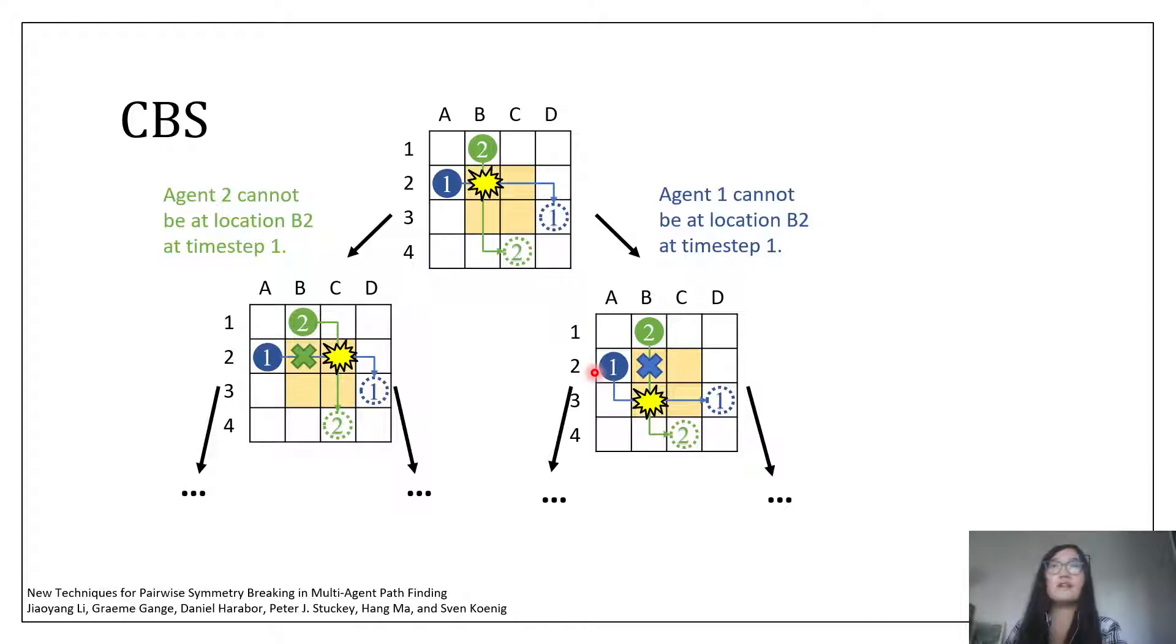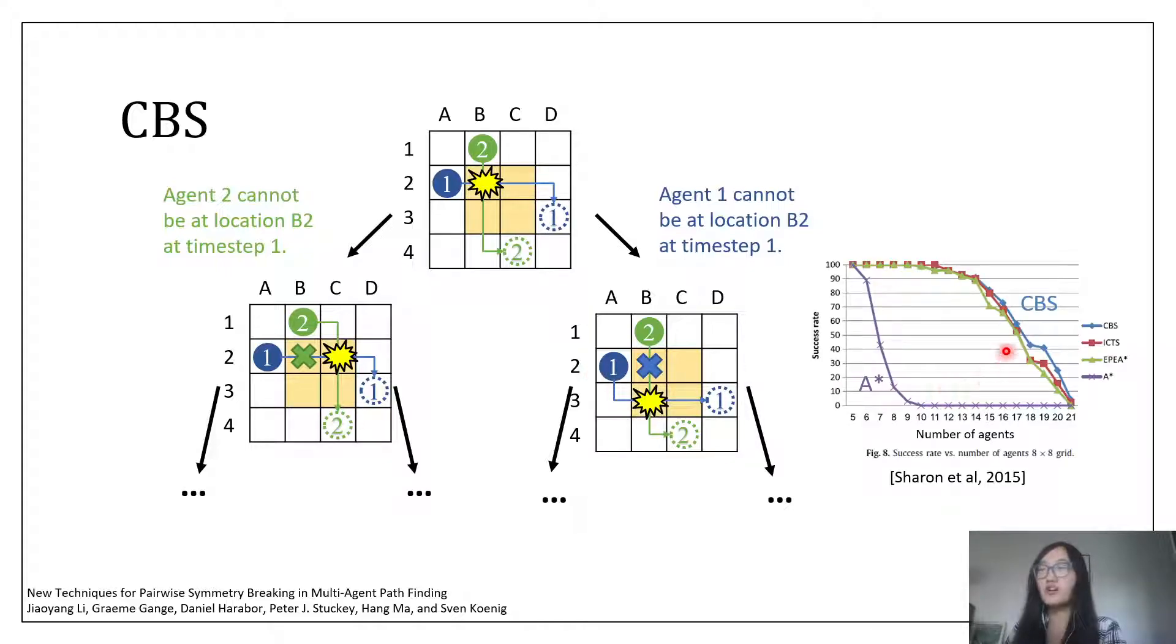This is a very simple idea, but it's already shown that this idea works much faster than A-star. In this figure, the x-axis is the number of agents, and the y-axis is the success rate, which is the solved instances within the time limit. We can see that CBS has a much better success rate than A-star.